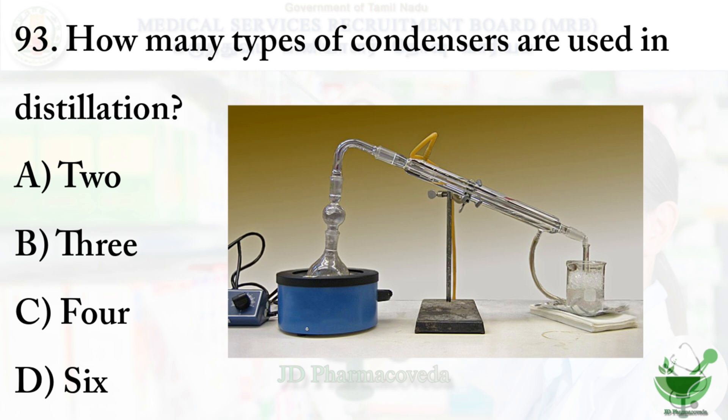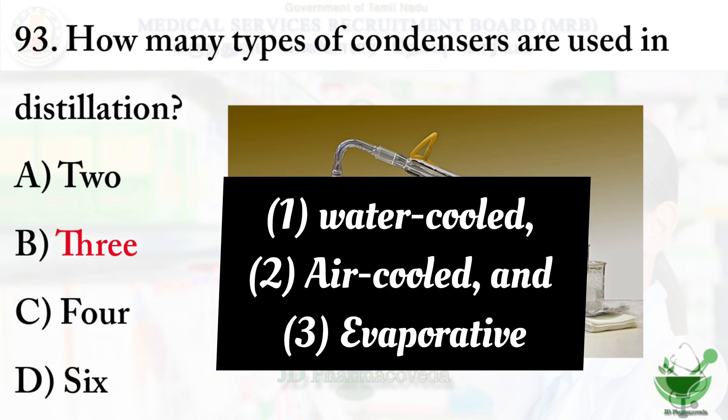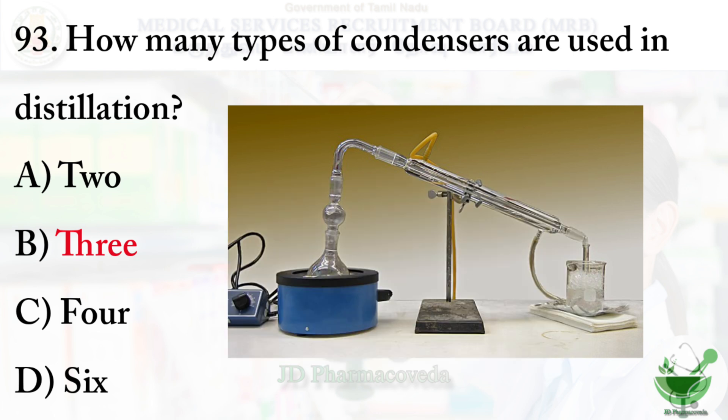Question number 93: how many types of condensers are used in distillation? The options are: option A — 2, option B — 3, option C — 4, option D — 6. The right option is option B: 3. The types are water-cooled, air-cooled, and evaporative. The condenser mostly used is the Liebig condenser.